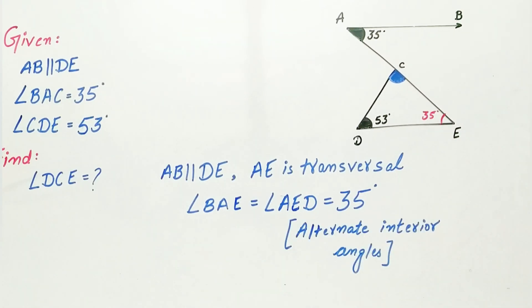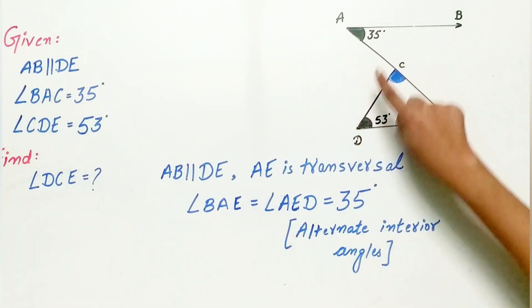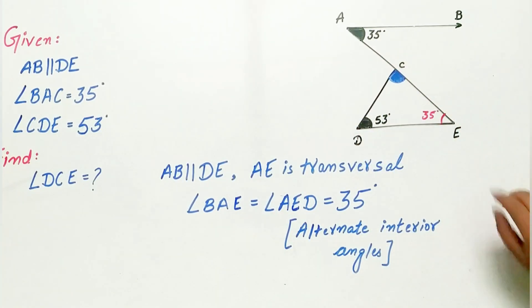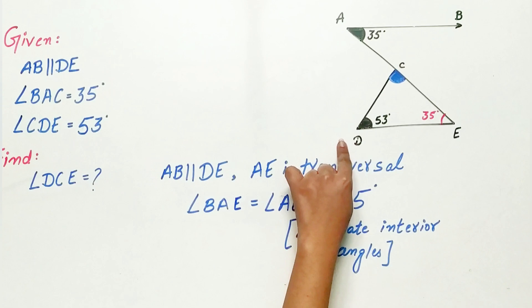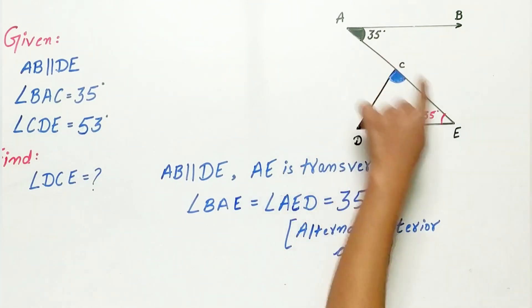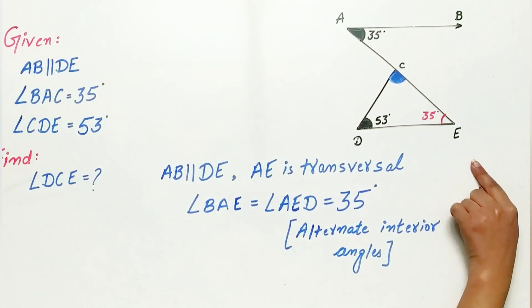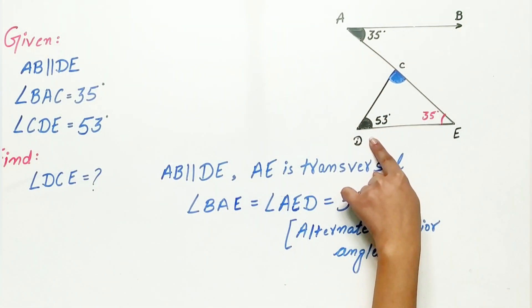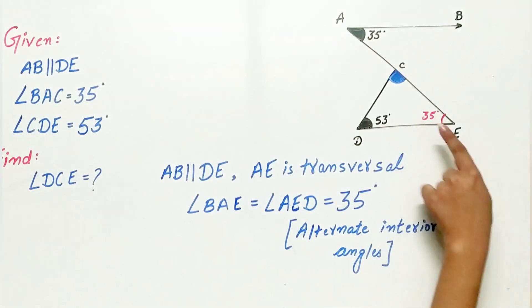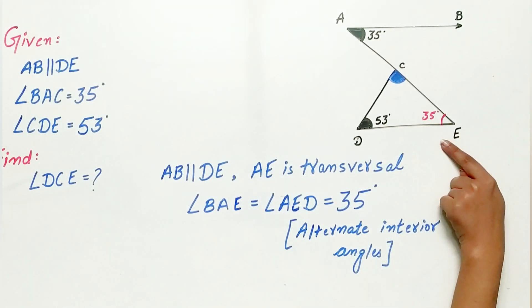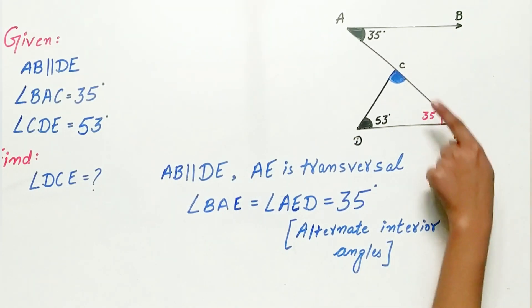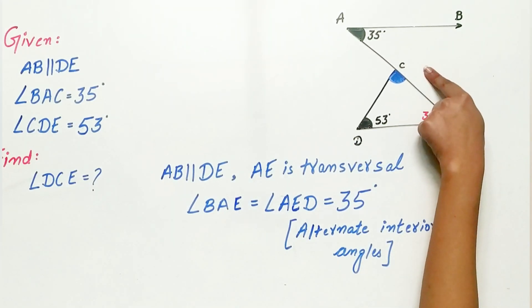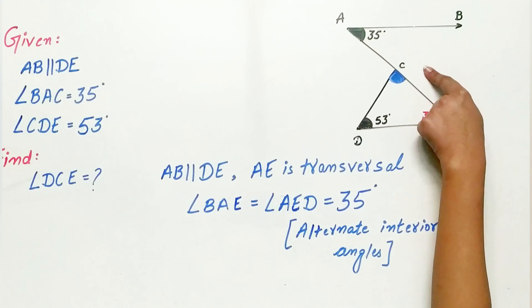Now we have to find out angle DCE. DCE is a triangle. Angle D is 53 degrees and angle E is 35 degrees, so we can easily find out angle C.